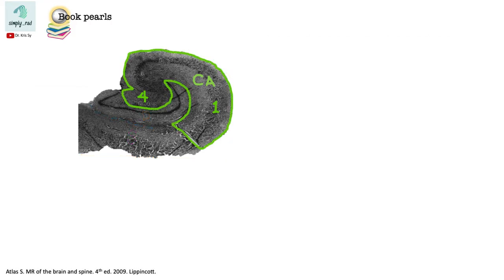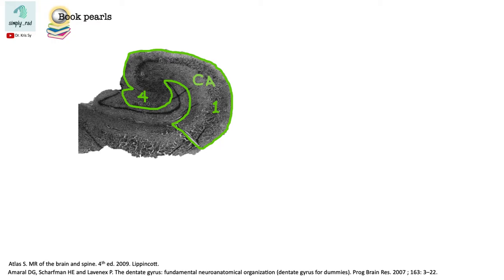Notice here that portions 1 and 4 of the Cornu Ammonis are somewhat thick. And in CA4, the darkly staining pyramidal cell layer is distinct.